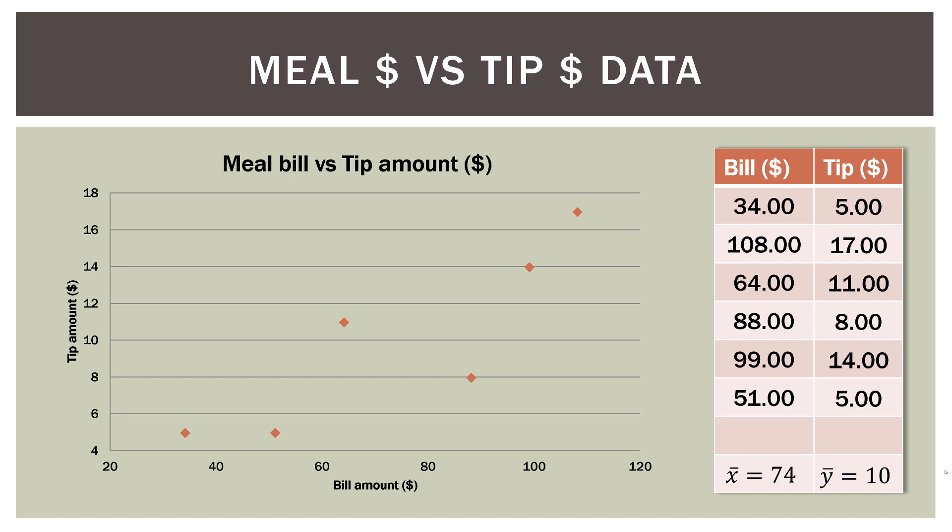Here is the data we have been using in the previous videos in this series. Basically, we're looking at how to model the bill amount in a restaurant on the x-axis, which is our independent variable, and then the tip amount that the server gets based on that bill. Here in the U.S., it's standard practice to tip a waiter or waitress in a fairly nice restaurant based on the quality of service and the amount of the bill. On the y-axis we have the tip amount in dollars.